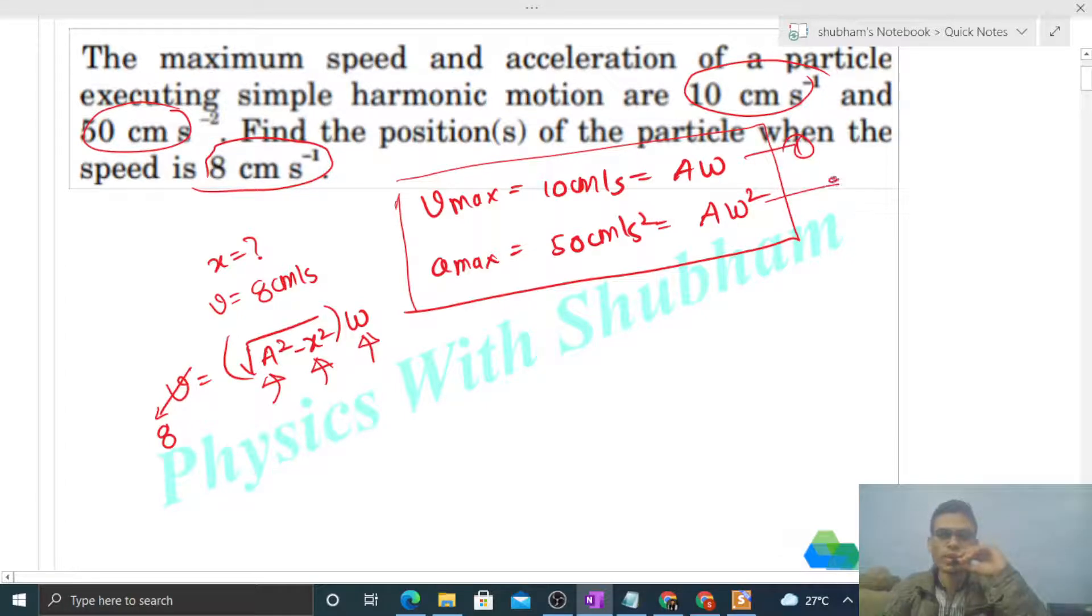Let's do one thing, divide both equations. So look, 10 upon 50, that is equal to A omega divided by A omega square. So A omega will cancel. So 1 over omega is 1 over 5. So from here you will get omega is equal to 5.